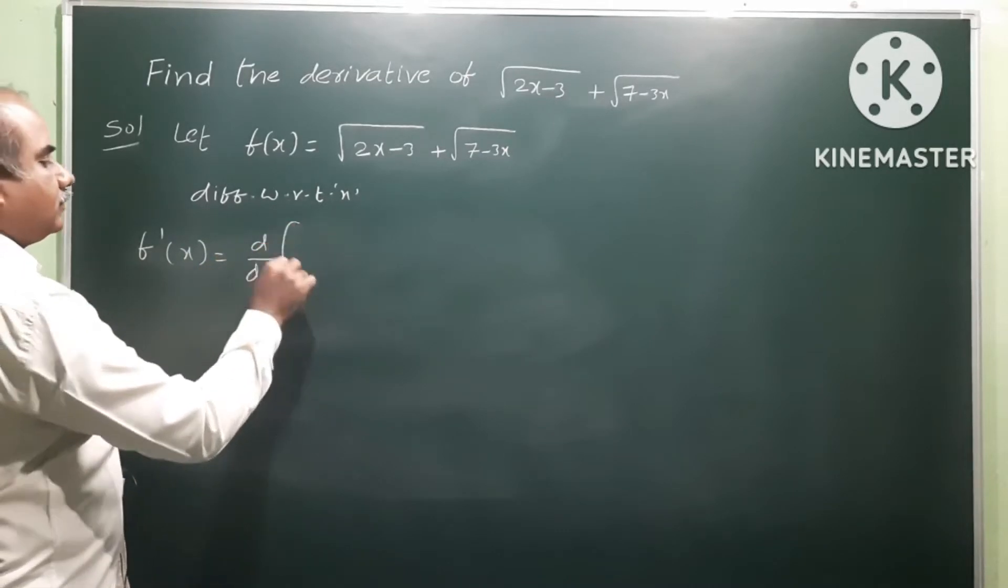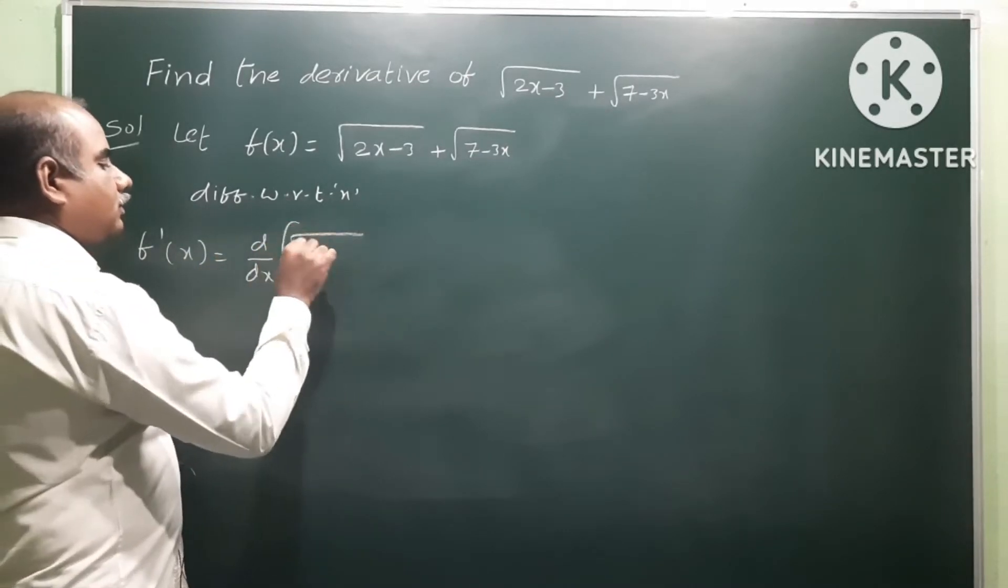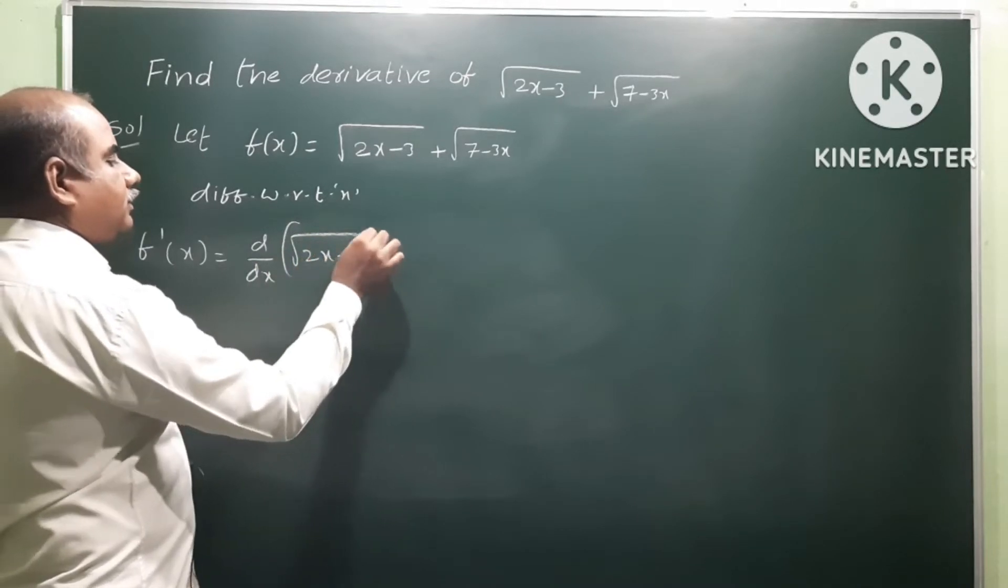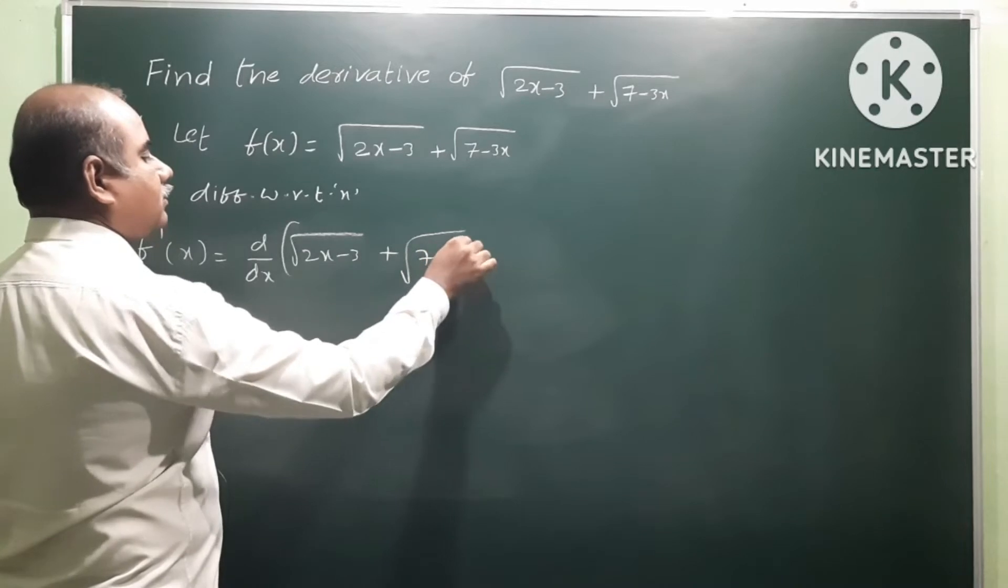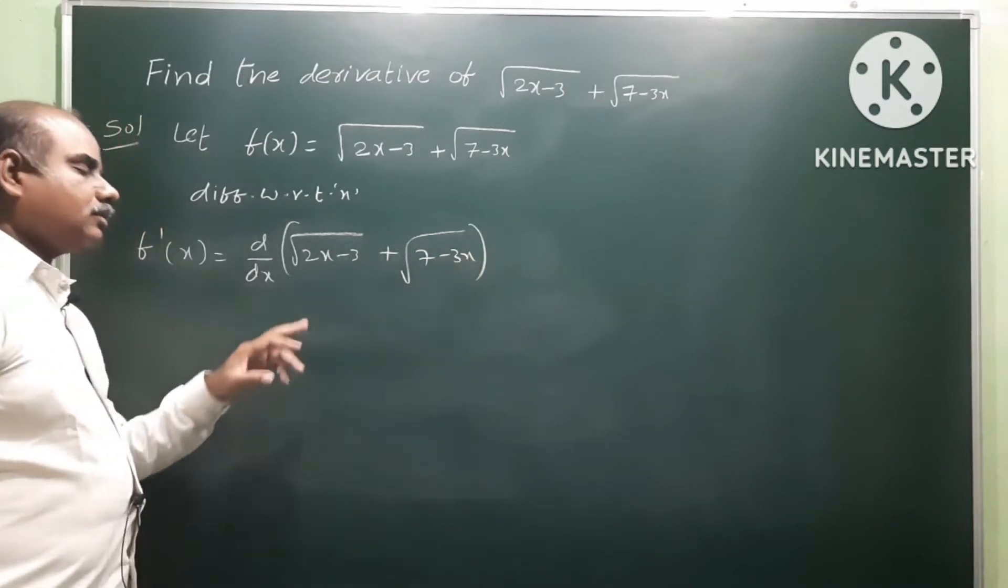d/dx of square root of 2x minus 3 plus square root of 7 minus 3x. So when we have two functions added together, we can separate them and find the derivative of each term separately.